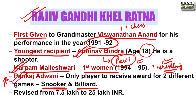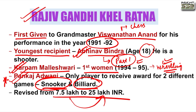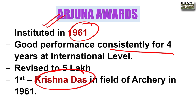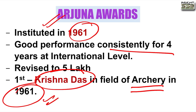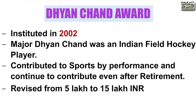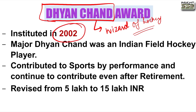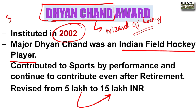The Khel Ratna Award prize money was revised from 7.5 lakhs to 25 lakhs. Arjuna Award was instituted in 1961 — it is also given for consistent good performance over 4 years. The first recipient was Krishna Das, associated with archery. Dhyan Chand Award was introduced in 2002; Major Dhyan Chand is known as the 'Wizard of Hockey' and was an Indian Field Hockey player. Under his captainship, 3 gold medals were won in the Olympics. The award's amount was revised from 5 lakhs to 15 lakhs.